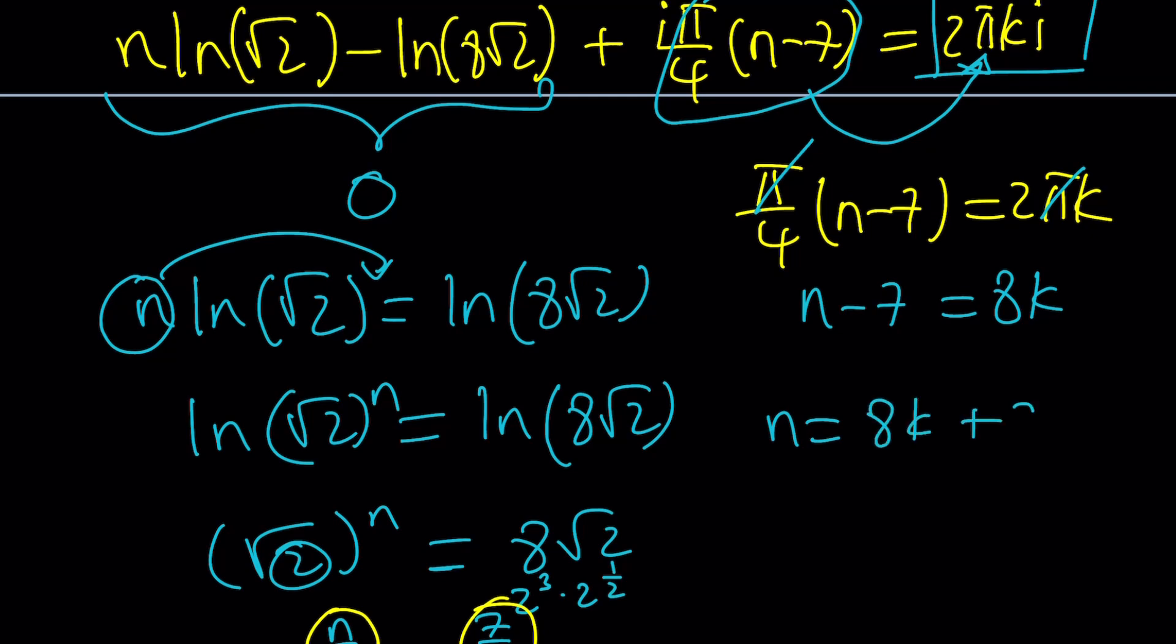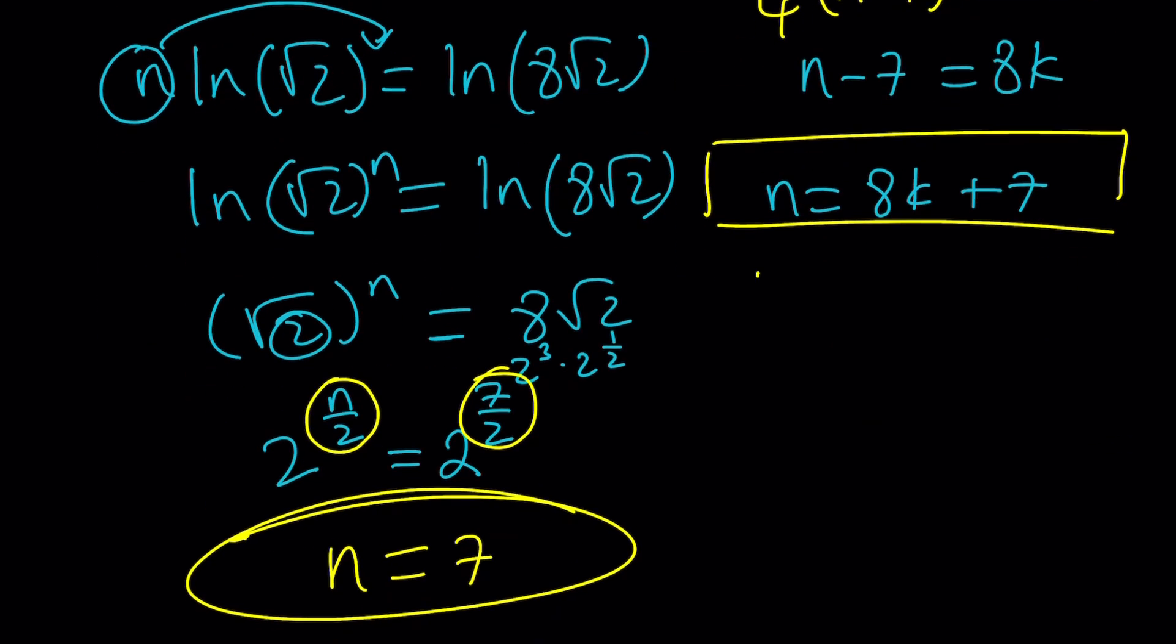Now, n and k are both integers. So for example, if k equals 0, n is going to be 7.